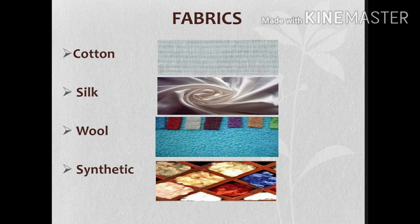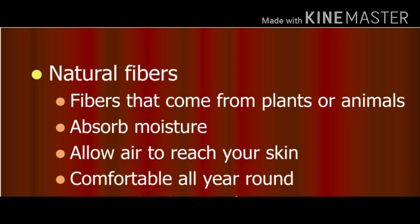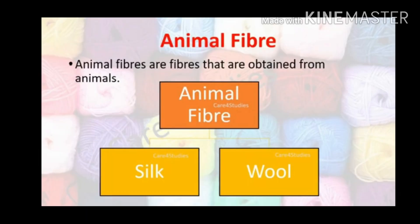You have studied about cotton, silk and wool, and you also learned how synthetic fibers are useful as well as harmful. Based on their sources, natural fibers can be classified as plant fiber and animal fiber. Silk and wool are animal fibers, while cotton and jute are plant fibers. Natural fibers absorb moisture and allow air to pass through them, keeping us comfortable all year round, whether it is cold or hot summer.